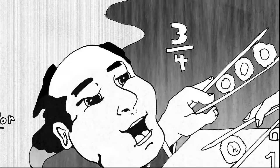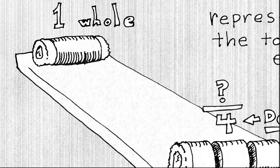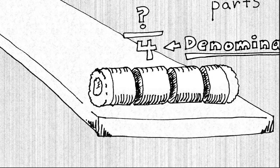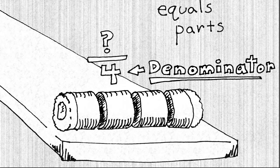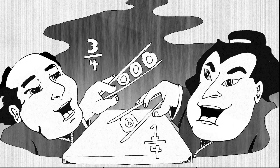Let's look at this sushi roll — it's packed with raw seafood and wrapped in a nice piece of seaweed. Let's say I cut it into four pieces. I'm going to start writing my fraction. On the bottom I write the denominator first, and I write a four, because the denominator represents the total equal parts. I cut the sushi into four equal parts, so I have to write a denominator of four.